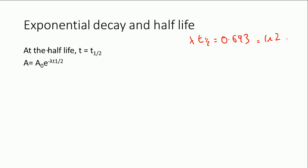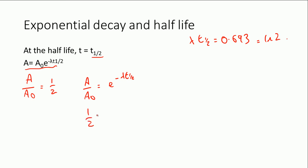This is required — to derive and show this to be the case. At the half-life, the time equals t-half, and the activity at that point is A0 times e to the minus lambda t-half. Also at the half-life, if we take the ratio A over A0 — the activity at the half-life compared to the initial activity — by definition that must equal one-half, because you must have half of what you had initially by the time you reach the half-life.